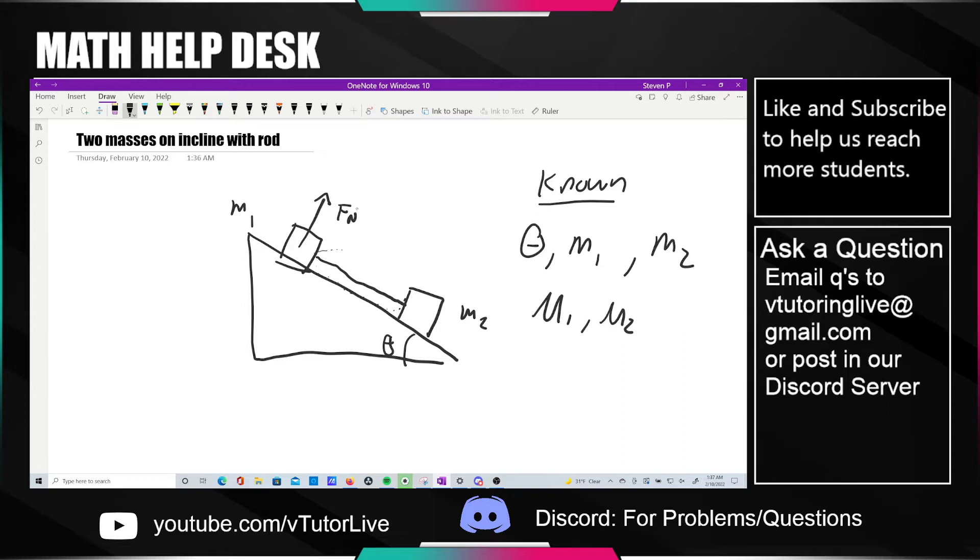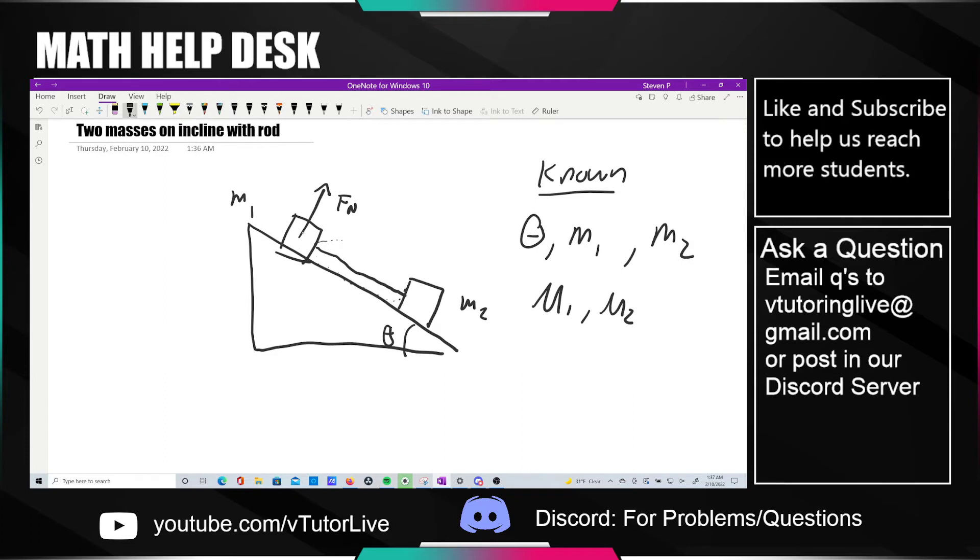So there's the normal force that's perpendicular to the surface. There's the force of gravity that's going straight downwards. And perhaps we can just go ahead and break that up into the components like we normally do. And as always, this angle is going to be theta.